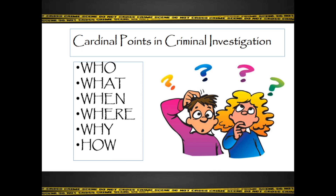Who committed it — we are identifying the suspects. What specific crime was committed — the name and designation of the crime should be included. When was the crime committed — you should take down the exact date and time. Where was the offense committed — it is the location of the crime scene. Why was it committed — the motive and intent of the suspect. And how was the offense committed — the modus operandi used by the suspect.